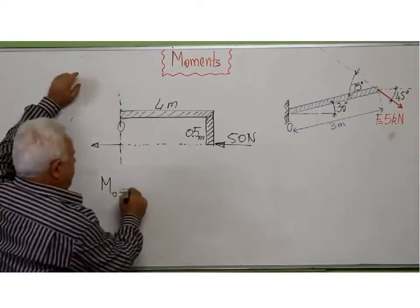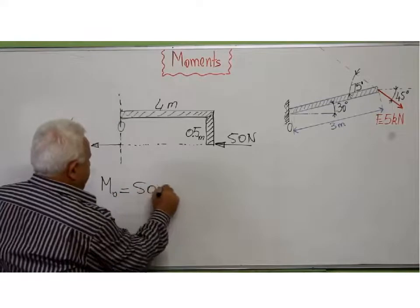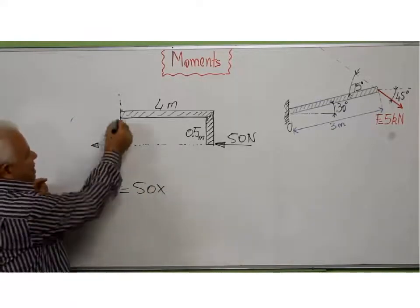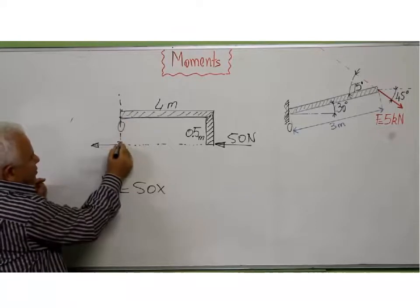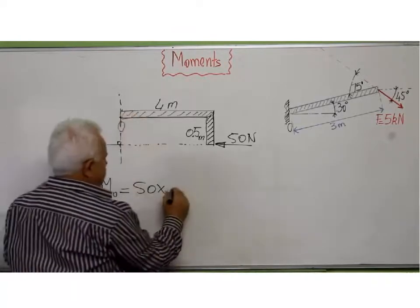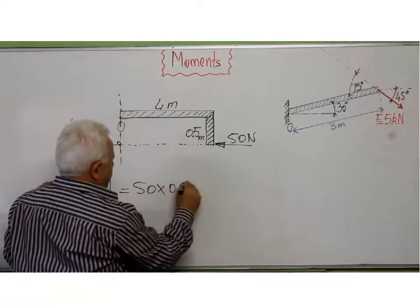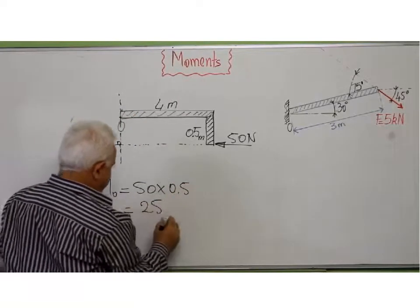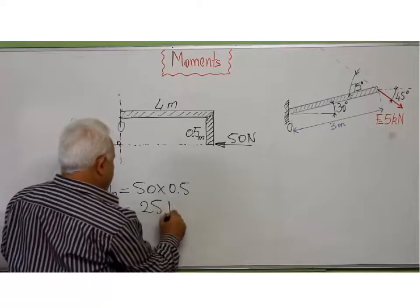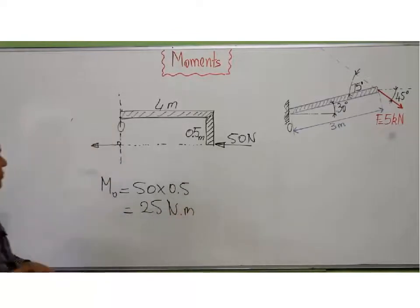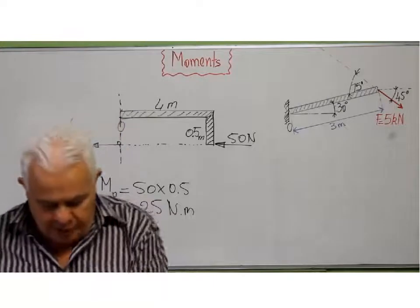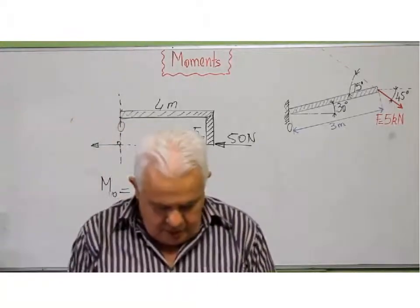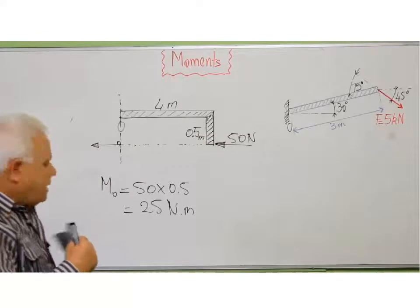So M equals 50 newtons times the perpendicular distance. The perpendicular distance from the line of action to the point is 0.5 meters, so M equals 50 times 0.5, which is 25 newton-meters. Again, the moment is the force times the perpendicular distance from the line of action.